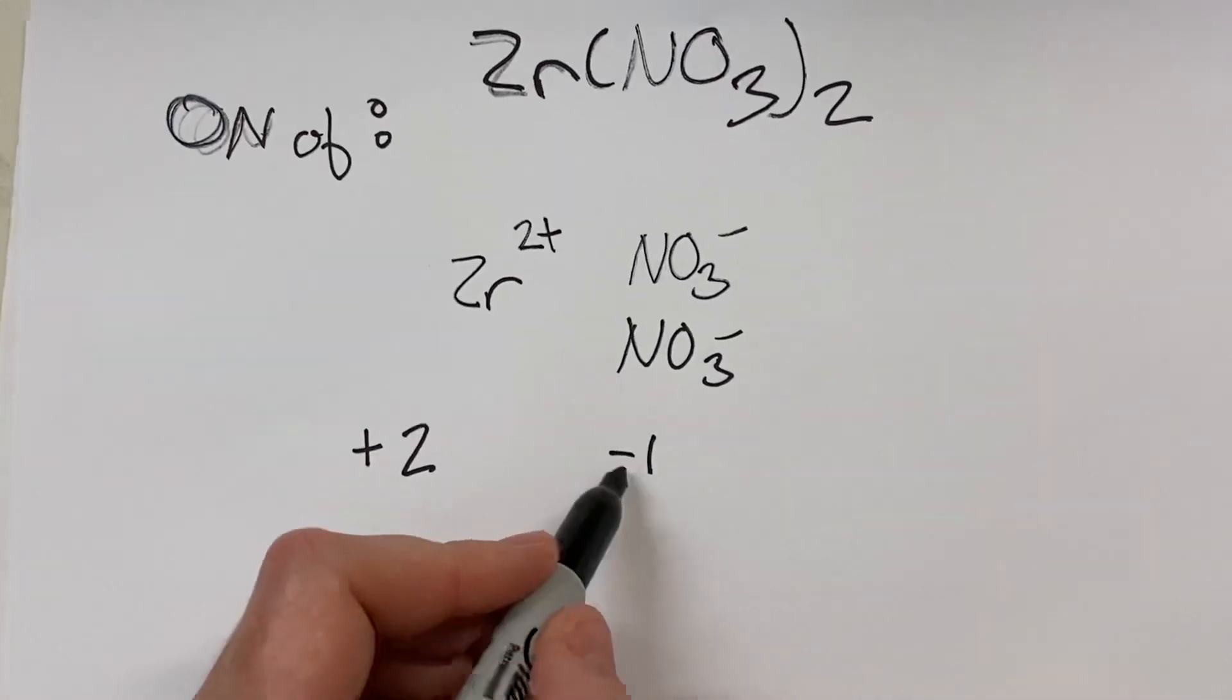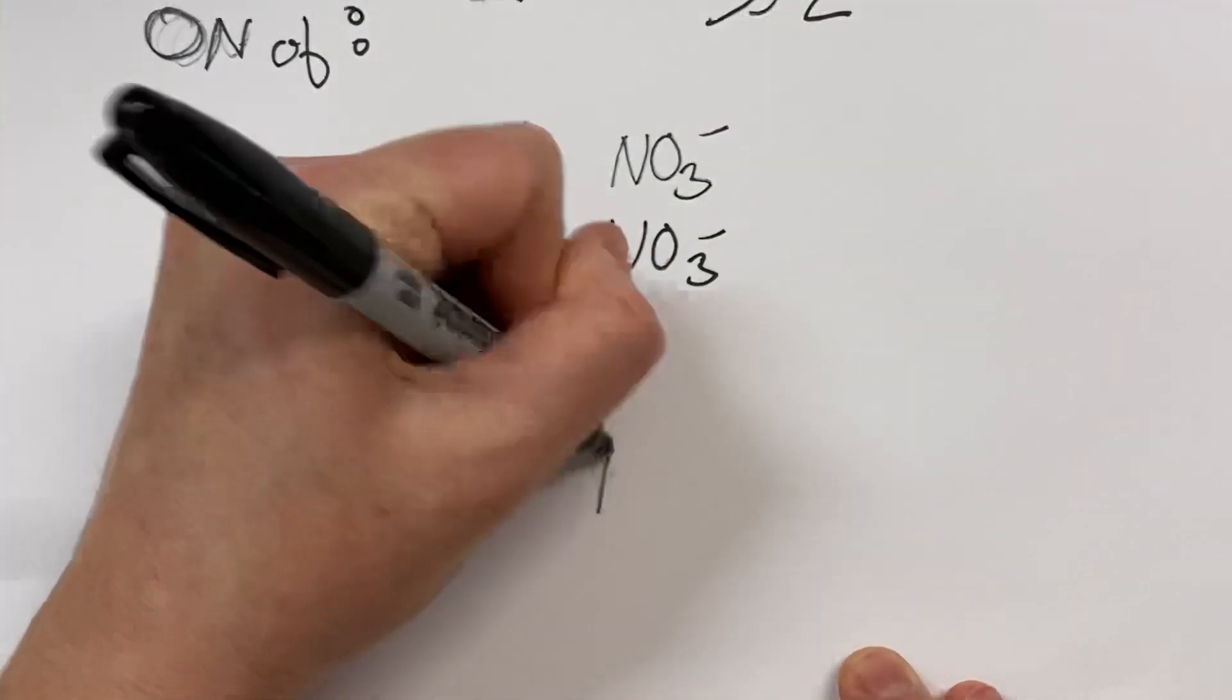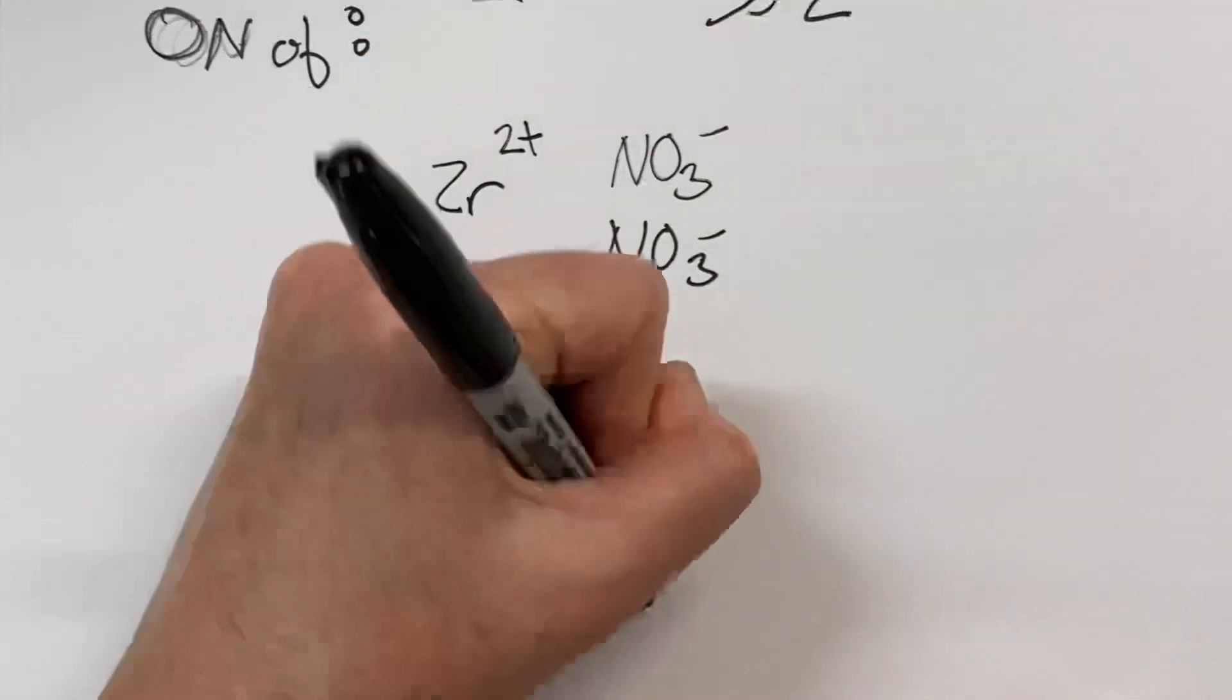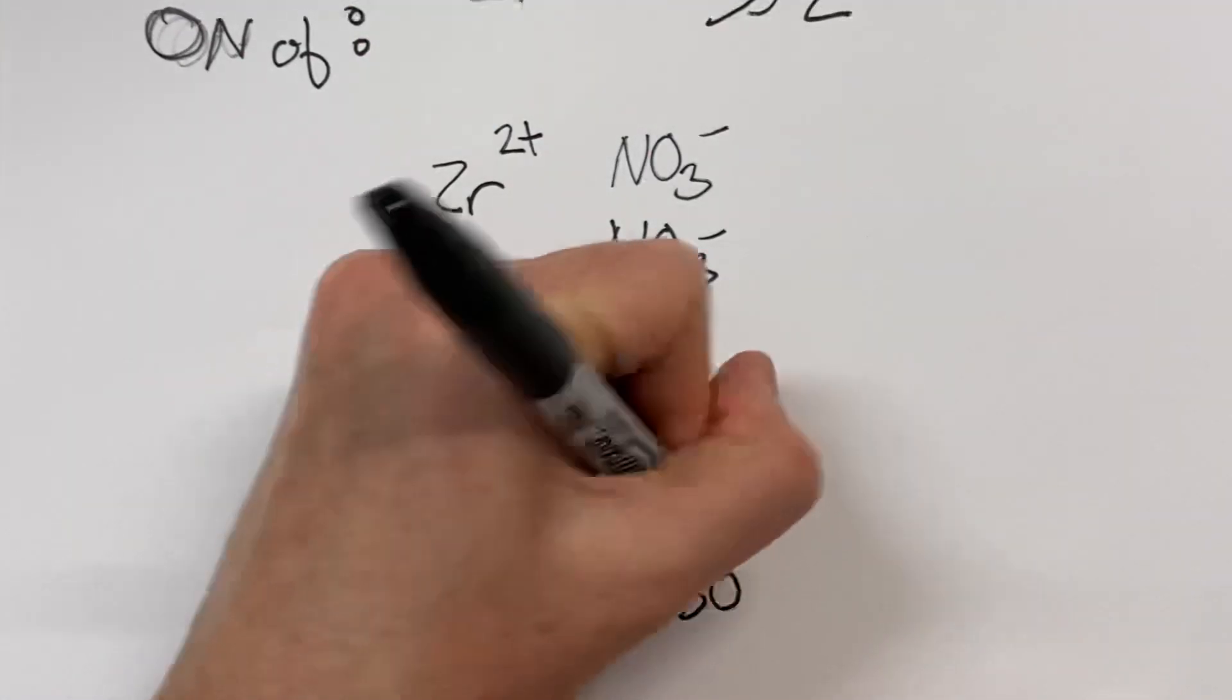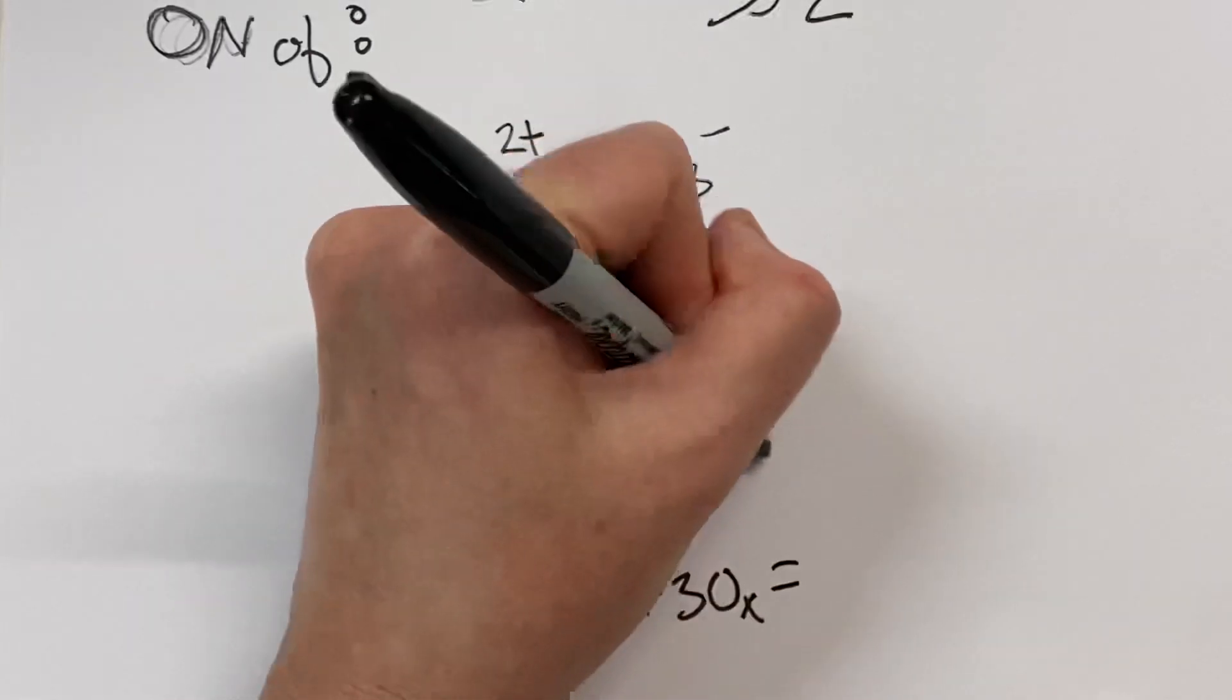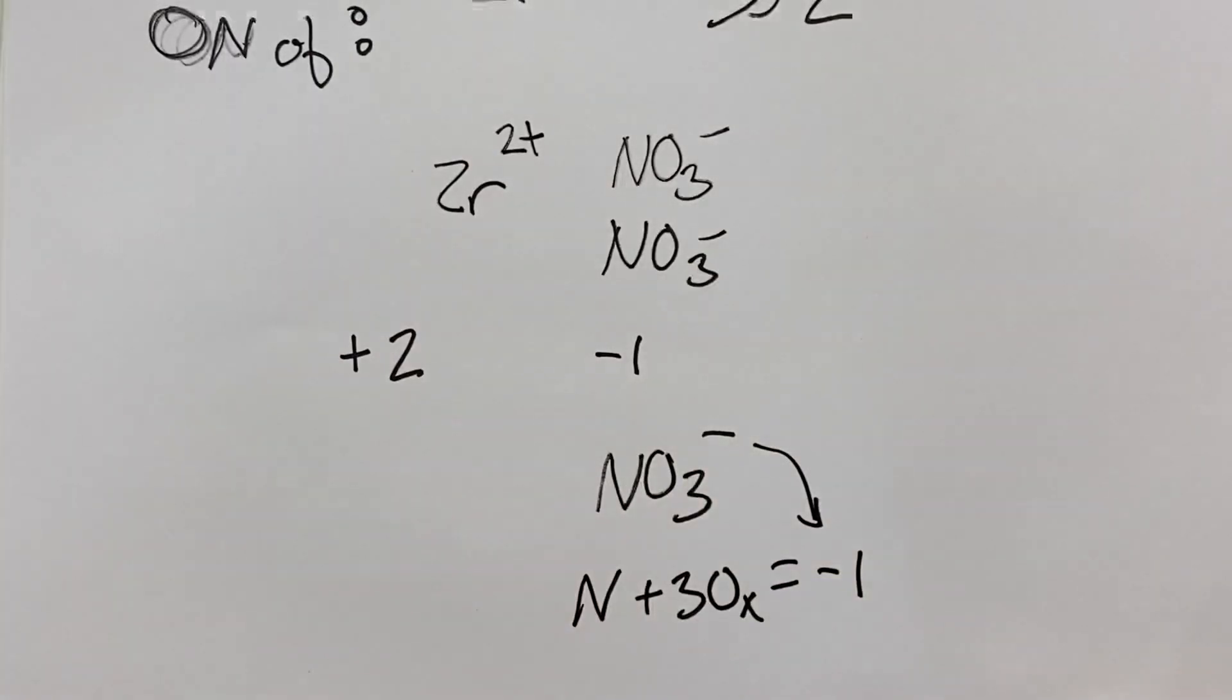So now we're just going to break this down and look at NO3. Well, nitrate is a nitrogen and three oxygens, and according to the rules, every single element in here, the oxidation number of each element in here, must add up to equal the overall charge. The overall charge of this is negative 1.